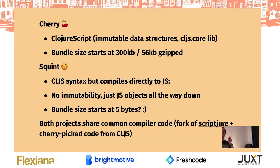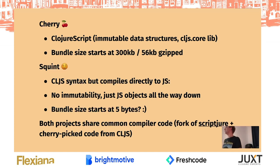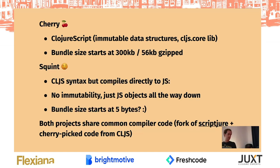Squint is like Cherry but compiles directly to JavaScript and doesn't include the ClojureScript core library — it has its own core library implemented in JavaScript, which is lighter weight for smaller bundle sizes. If you write a map in Squint, you get a JavaScript object and not a ClojureScript map. It comes with trade-offs, but for some programs with heavy interop this can be a nice choice. Both projects share common compiler code. These projects happened when I came across a project called Scripture, which already existed before ClojureScript. It was a tiny library to compile JavaScript snippets from Clojure as expressions, and it happened to work with Babashka.